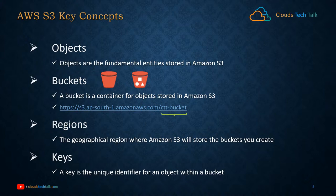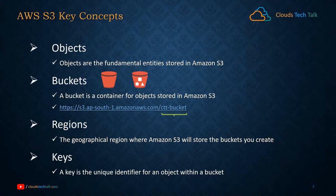The next item is regions. Regions are the geographical locations where Amazon S3 will store the buckets you create. You can select a specific region while creating S3 buckets, and all your content will stay in that region only unless you explicitly transfer it to another region. For example, if you create a bucket in the Mumbai region and store a file there, the file will be stored in the Mumbai region only. Amazon will not transfer that file somewhere else unless you explicitly move it — for example to the London region.